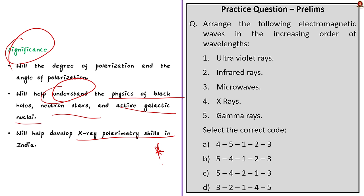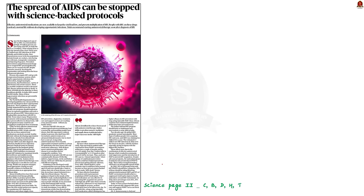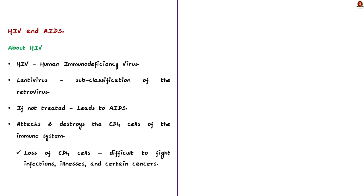Now let us move on to the next news article discussion. This science page article talks about stopping the spread of AIDS with science-backed protocols. In this newspaper analysis, we are going to see the basics of HIV and AIDS from the prelims perspective. HIV stands for human immunodeficiency virus.